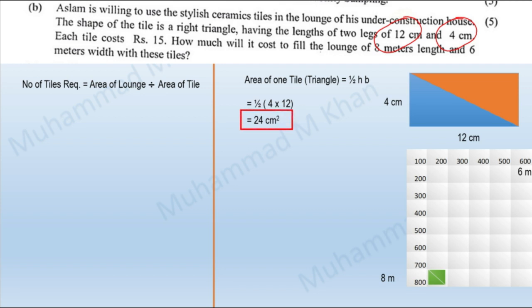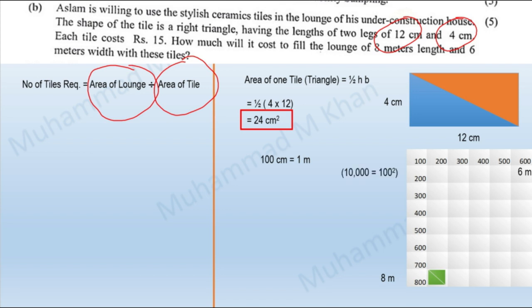Since we have calculated the area of each tile, the next step is to calculate the area of the lounge. Before I move forward, I want to make clear that there are 100 centimeters in one meter, and since the square of 100 is 10,000, there are 10,000 centimeters square in one meter square.